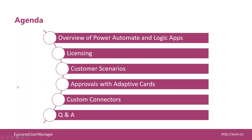A quick agenda of what we're going to be going over here. We're going to start with an overview of both Power Automate and Logic Apps, just to level set people so they understand what the two products are, how they relate to each other. We're going to get into licensing — always a tricky topic with Microsoft — and then we'll take you through some customer scenarios, including approvals with adaptive cards and some custom connectors if we have time near the end.